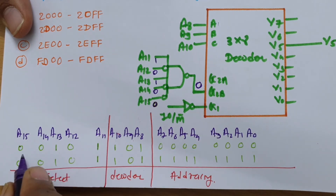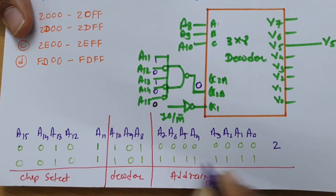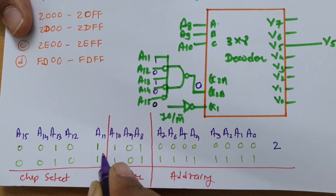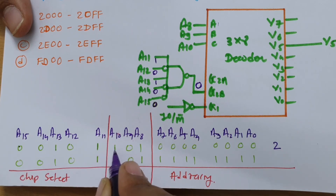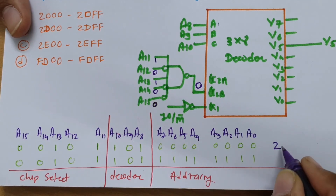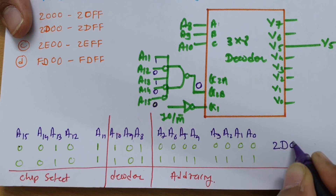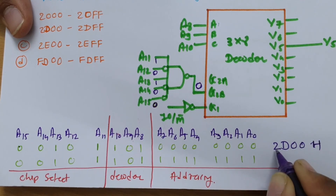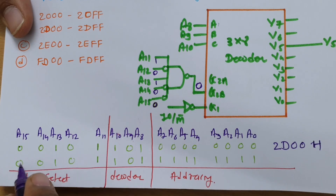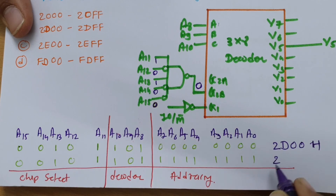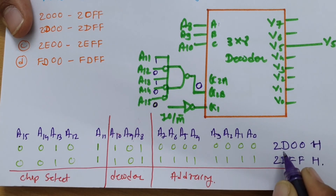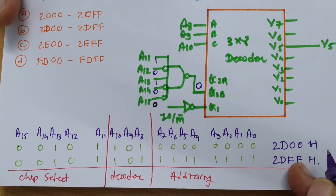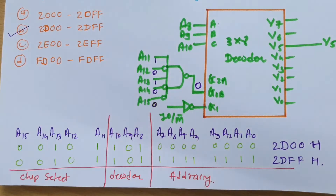Converting to hex: A15–A12 = 0010 = 2, and A11–A8 = 1101 = D. So the starting address is 2D00h and the ending address is 2DFFh. Checking the options, the correct answer is 2D00h to 2DFFh.